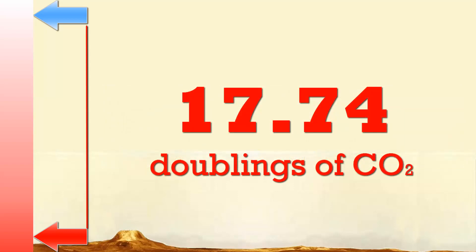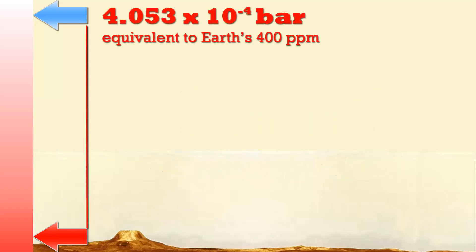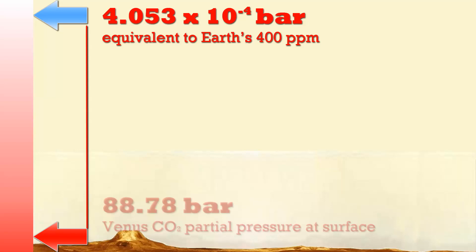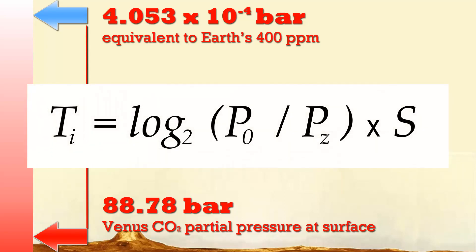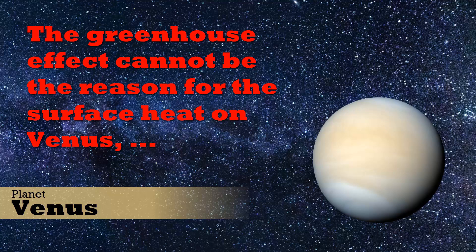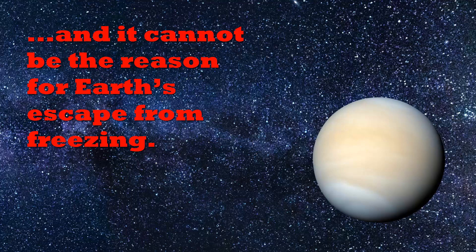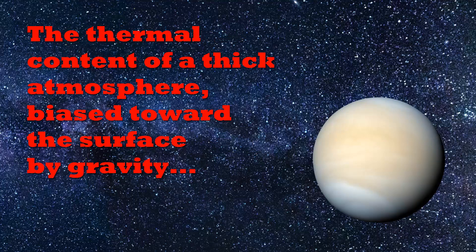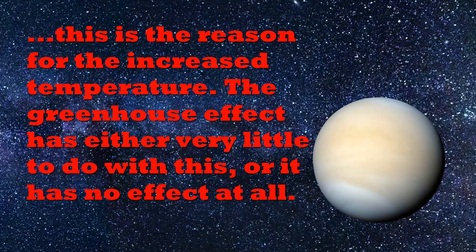On Venus, we have 17.74 doublings of CO2 to get from the Earth-equivalent partial pressure of CO2 — 4.053 times 10 to the minus 4 bar, equivalent to Earth's 400 parts per million — to the surface CO2 partial pressure of 88.78 bar. To find the number of doublings, we take the surface pressure divided by the starting pressure and then take the base-2 logarithm. The greenhouse effect cannot be the reason for the surface heat on Venus, and it cannot be the reason for Earth's escape from freezing. The thermal content of a thick atmosphere, biased toward the surface by gravity, is the reason for the increased temperature. Based on the evidence and this reasoning, I'm beginning to suspect that the greenhouse effect, in the atmosphere at large, may be a phantom.